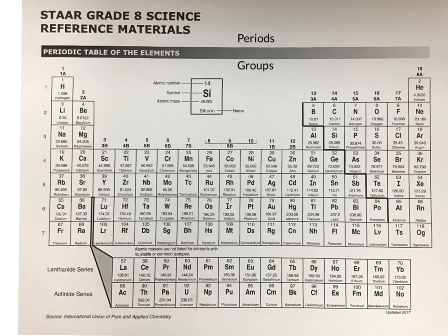Today we're going to learn about periods and groups on the periodic table. Periods are the horizontal rows that move from left to right across the periodic table. Groups are the vertical columns that go up and down. There are a total of 7 periods and 18 groups on the periodic table.